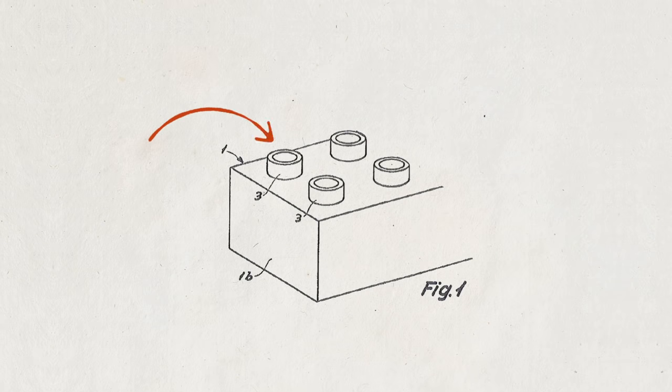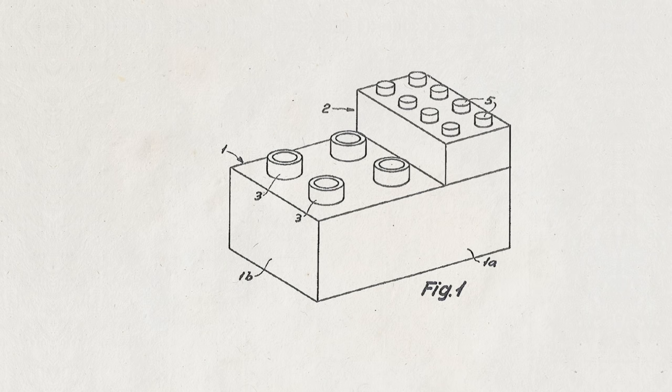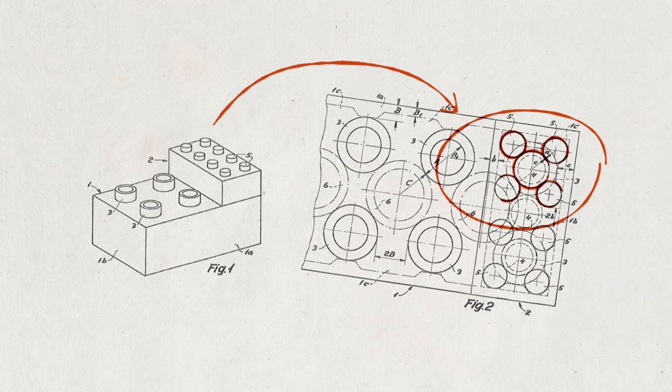By hollowing out the studs on top of the larger bricks, you can clutch the standard LEGO brick together with the new bigger design, all thanks to the tubes at the bottom of each brick.